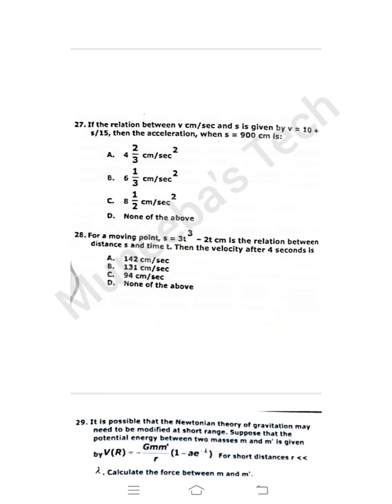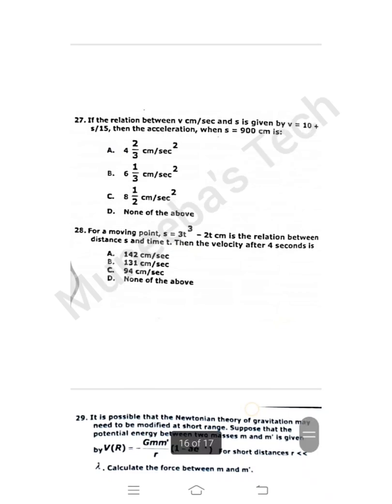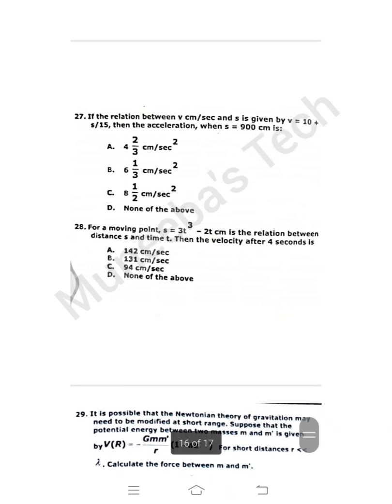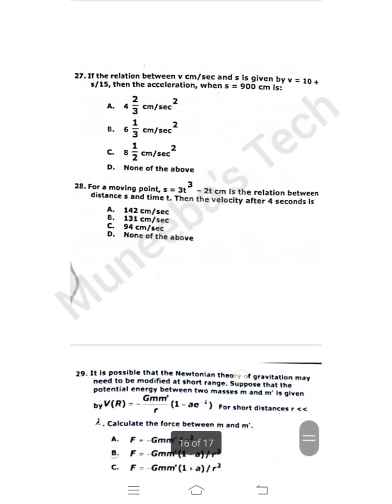Question 28: For moving point s = 3t³ - 2t centimeters is the relation between distance s and time t. Then the velocity after four seconds is v = ds/dt. You just put the values and then find the answer.